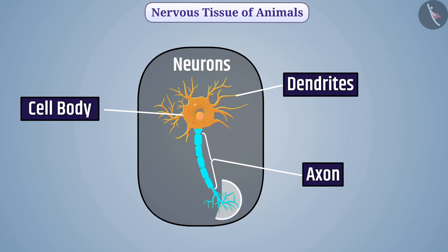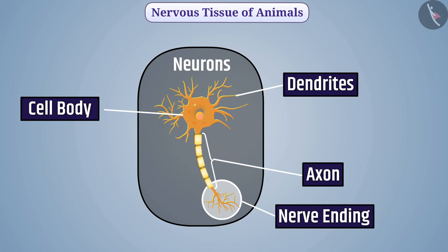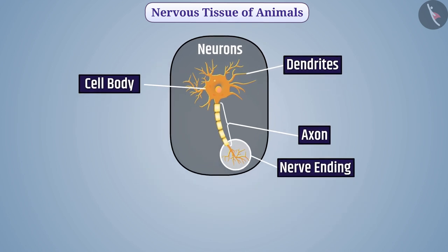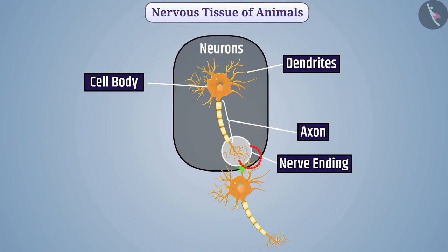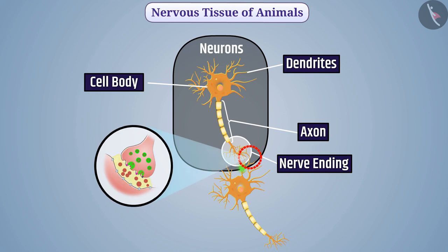The terminal end of the axon is called the nerve ending. The dendrite transmits the stimulus to the cell body, and through the cell body and axon the stimulus reaches the terminal end of the nerve, from where it reaches the dendrites of another neuron. The space between the end of one neuron and the dendrites of another neuron is called a synapse.